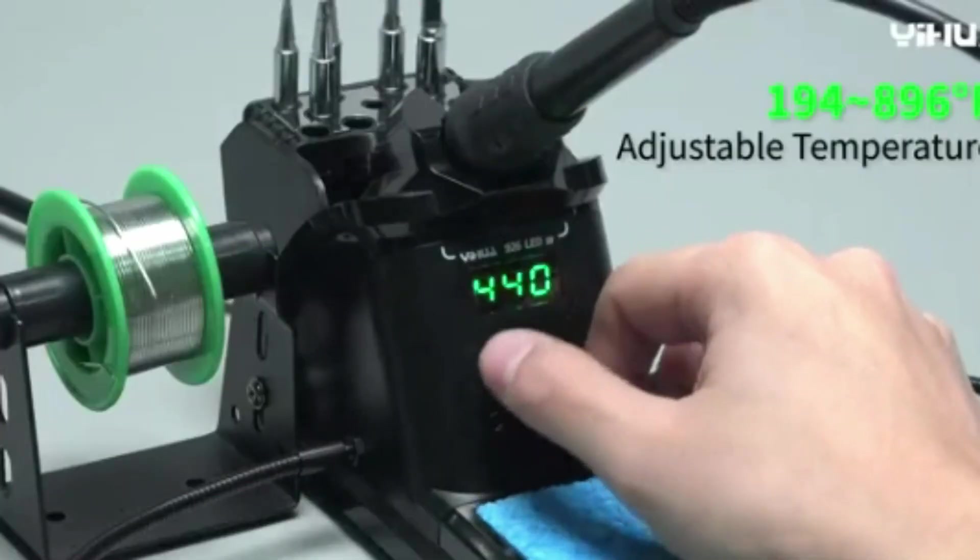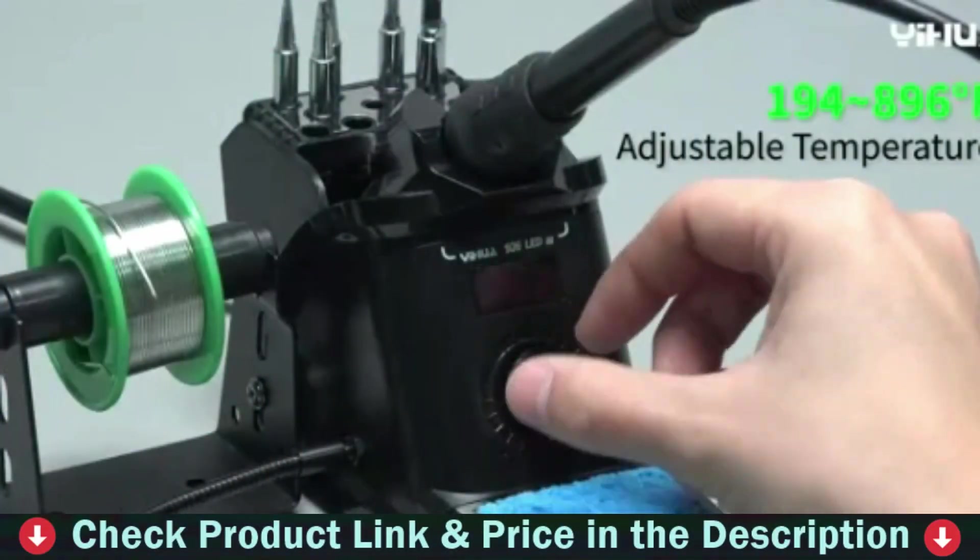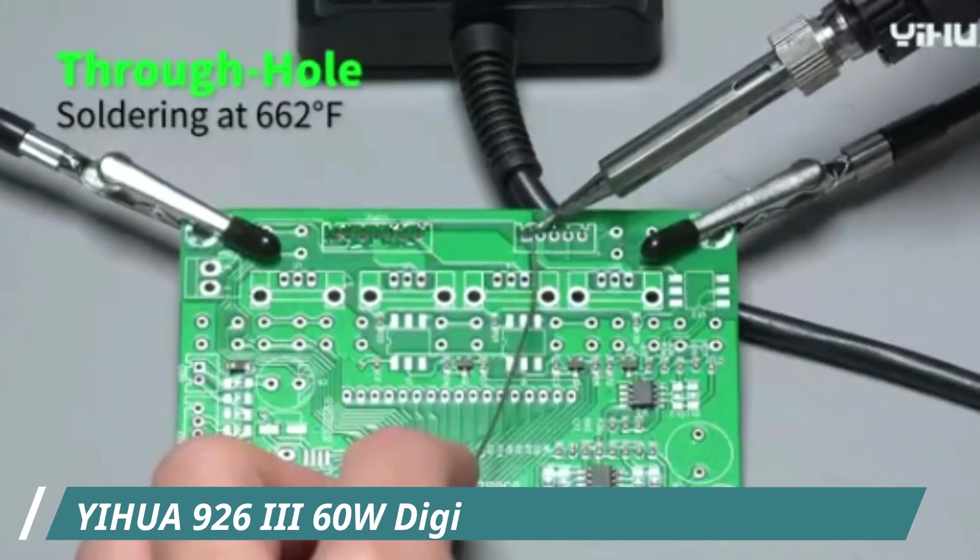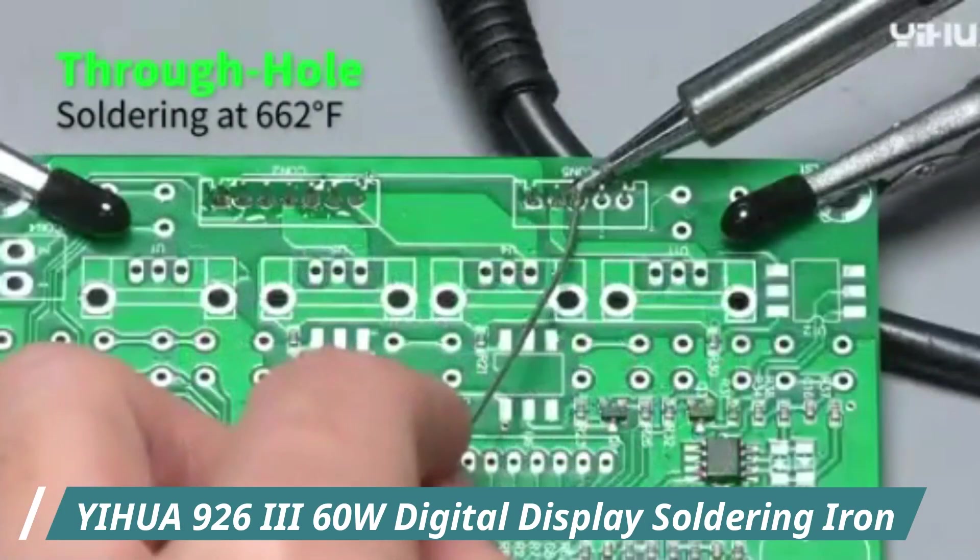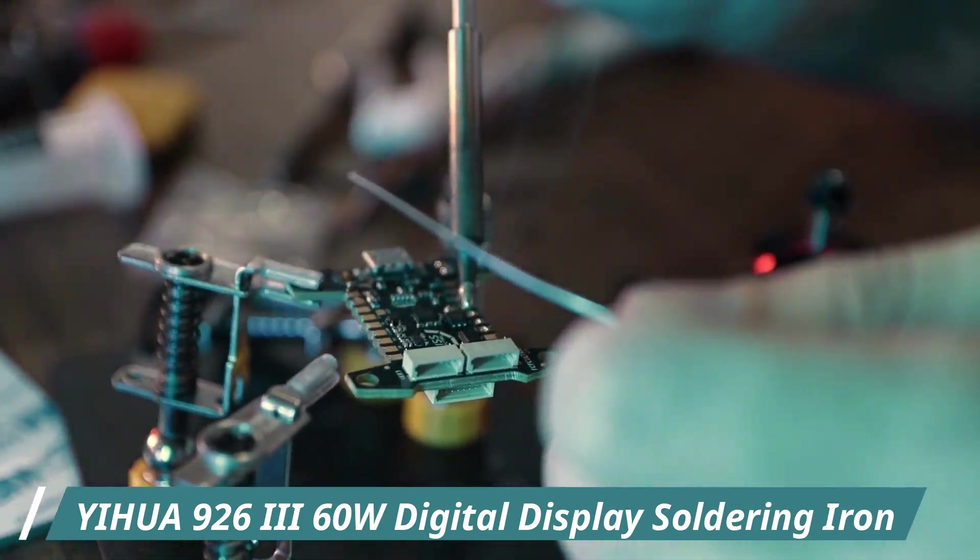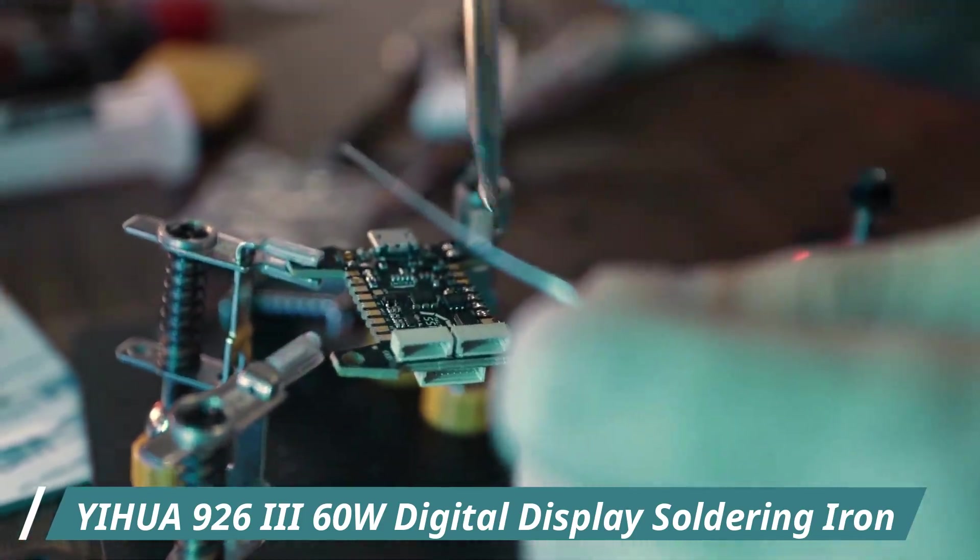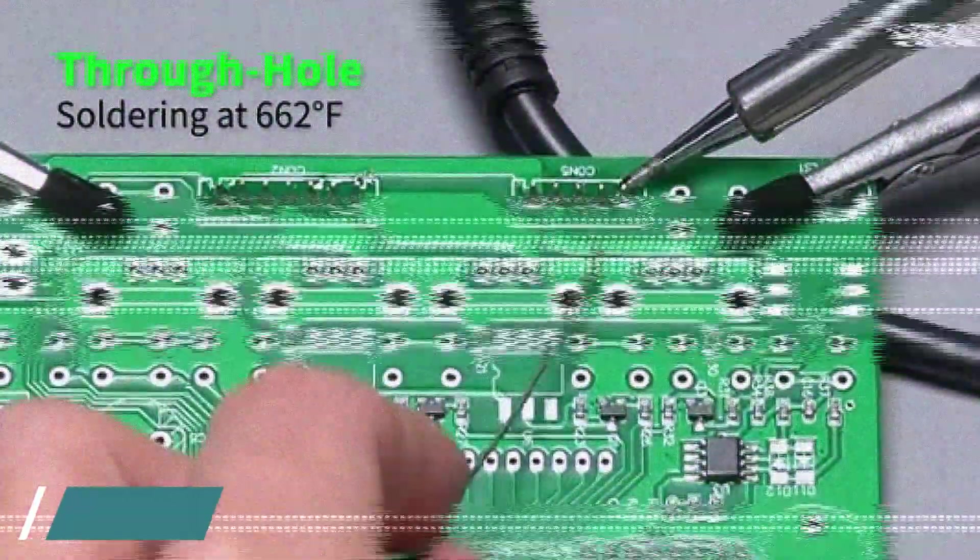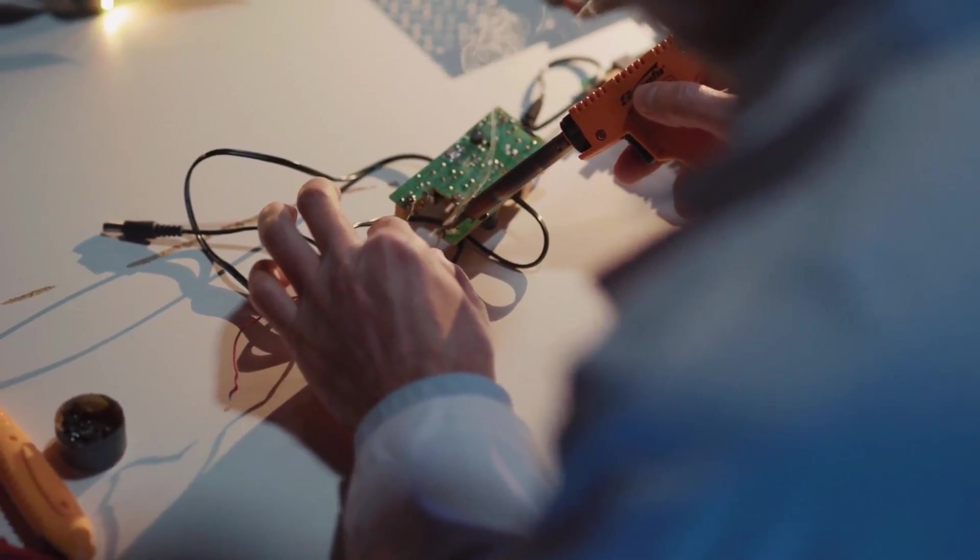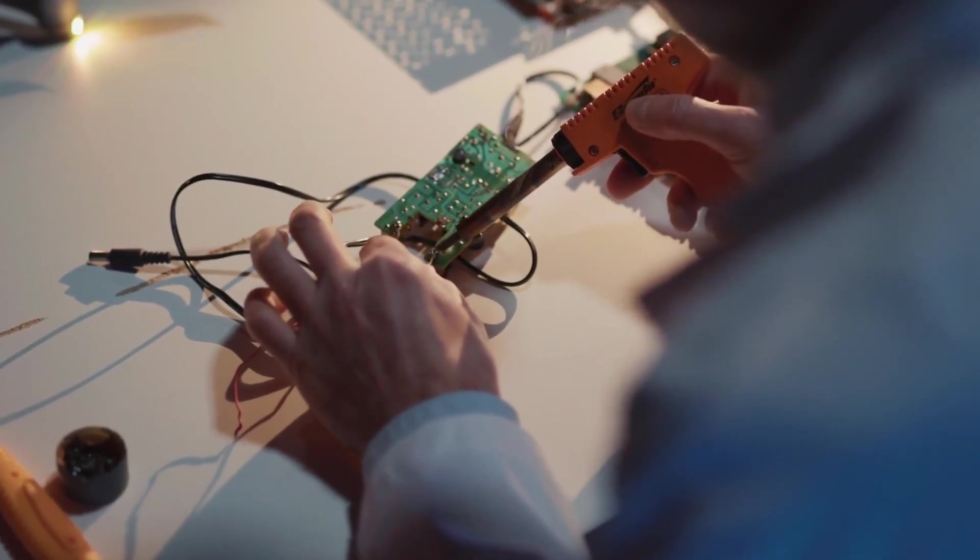The 60-watt soldering iron heats up incredibly fast, and the digital temperature display makes it easy to dial in the exact heat needed for your work, whether you're dealing with delicate components or larger joints. The ability to switch between degrees Celsius and degrees Fahrenheit is handy depending on your preference or region. The auto-sleep feature is a thoughtful addition. It helps preserve the tip life and conserve energy when you're not actively using the tool.